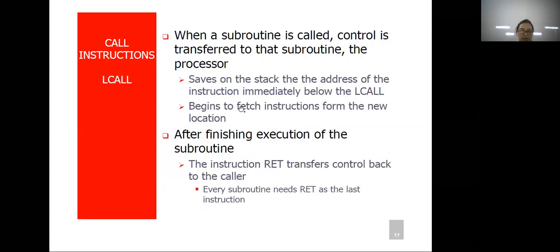When a subroutine is called using LCALL, control is transferred to that subroutine and the processor saves the return address on the stack — specifically the address of the instruction immediately below the LCALL. The processor then begins to fetch instructions from the new location. After completing the execution of the subroutine, the RET instruction transfers control back to the caller.